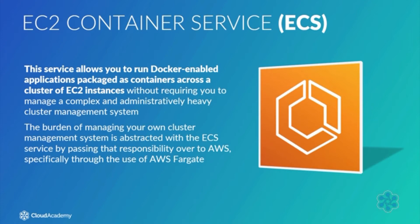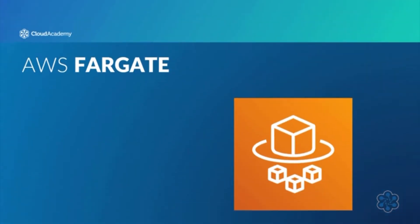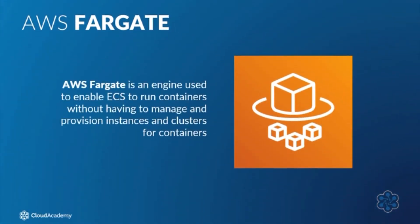If you are new to terms such as Docker, containers, and AWS Fargate, let me quickly define what they are. AWS Fargate is an engine used to enable ECS to run containers without having to manage and provision instances and clusters for containers.